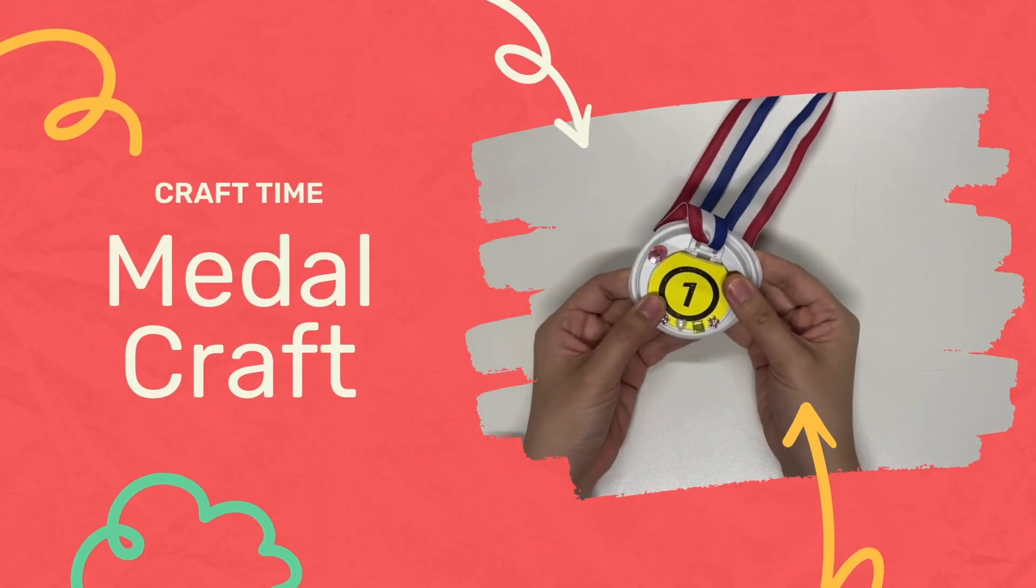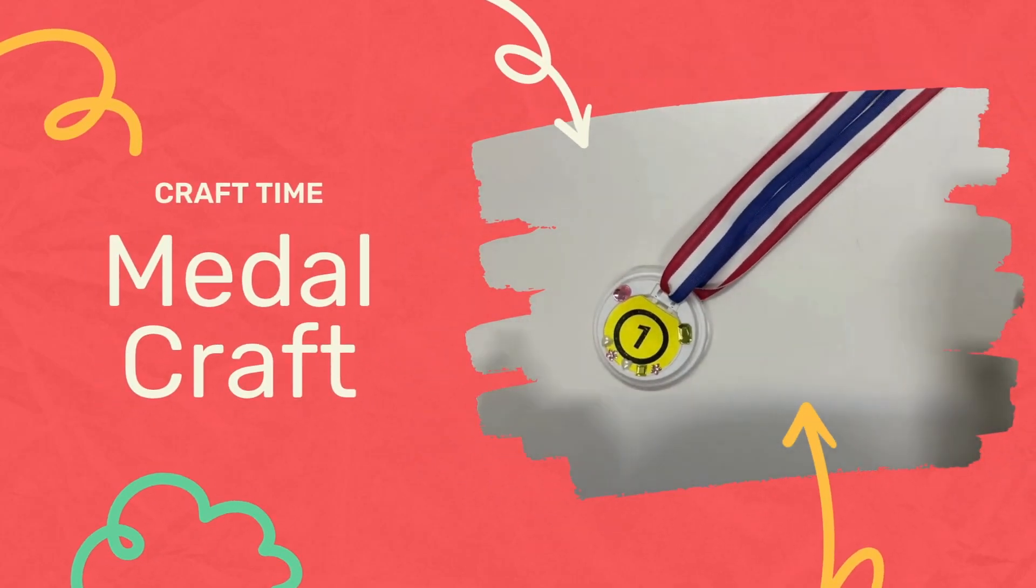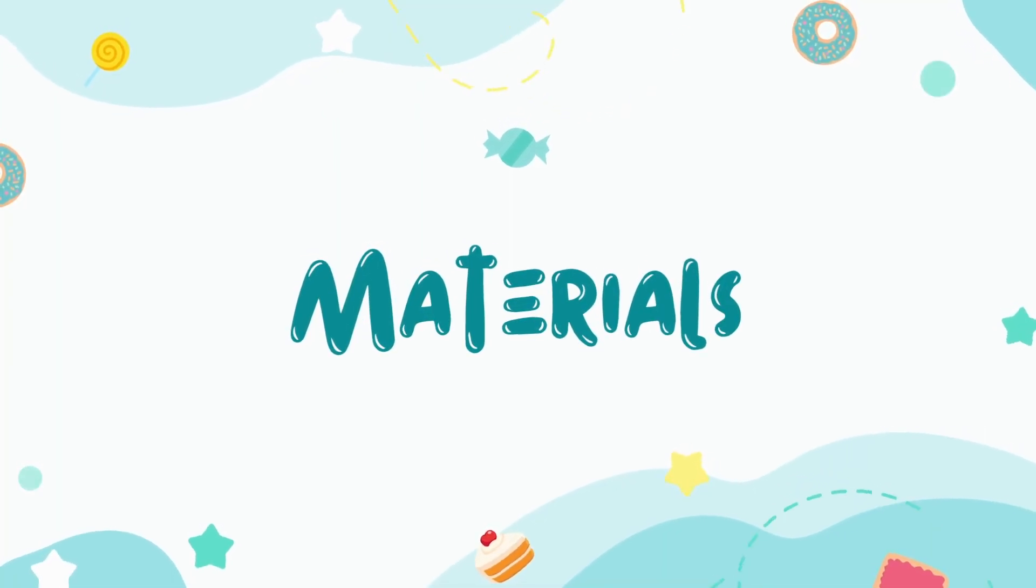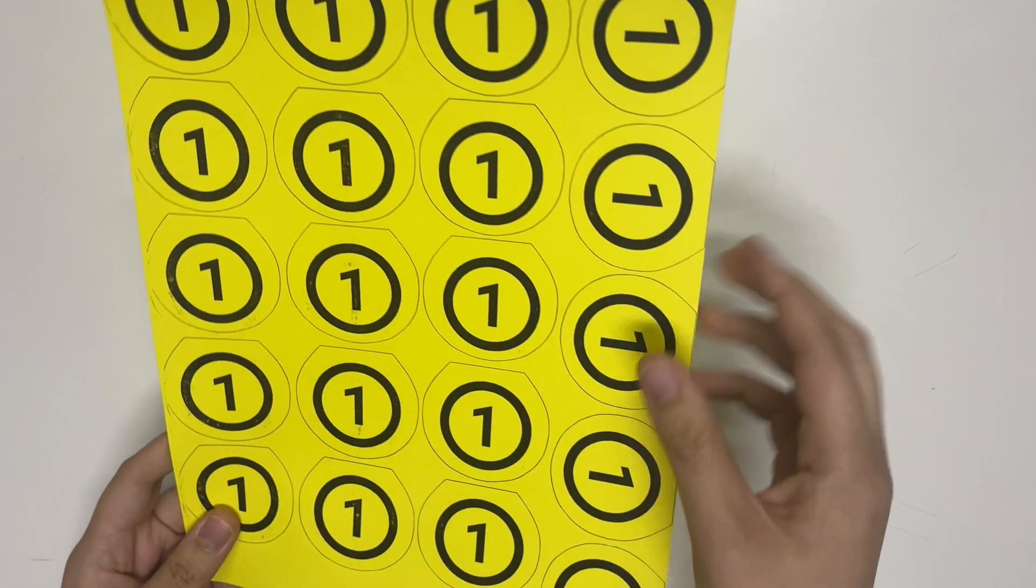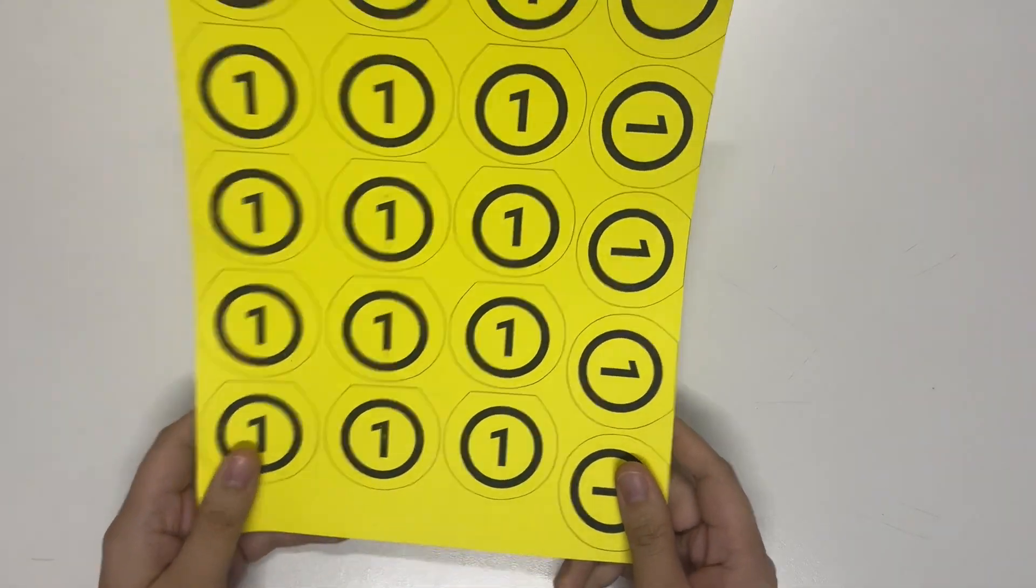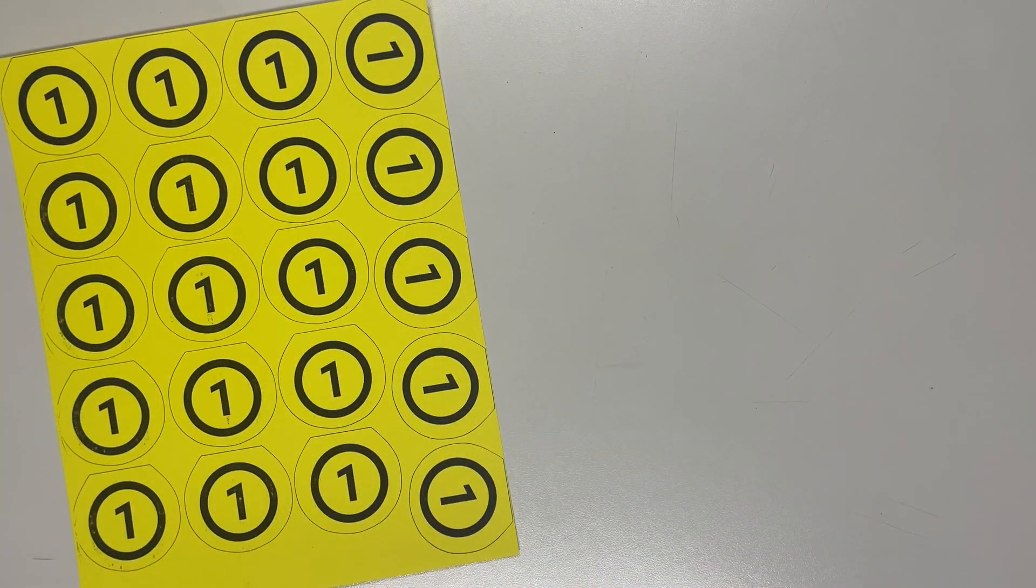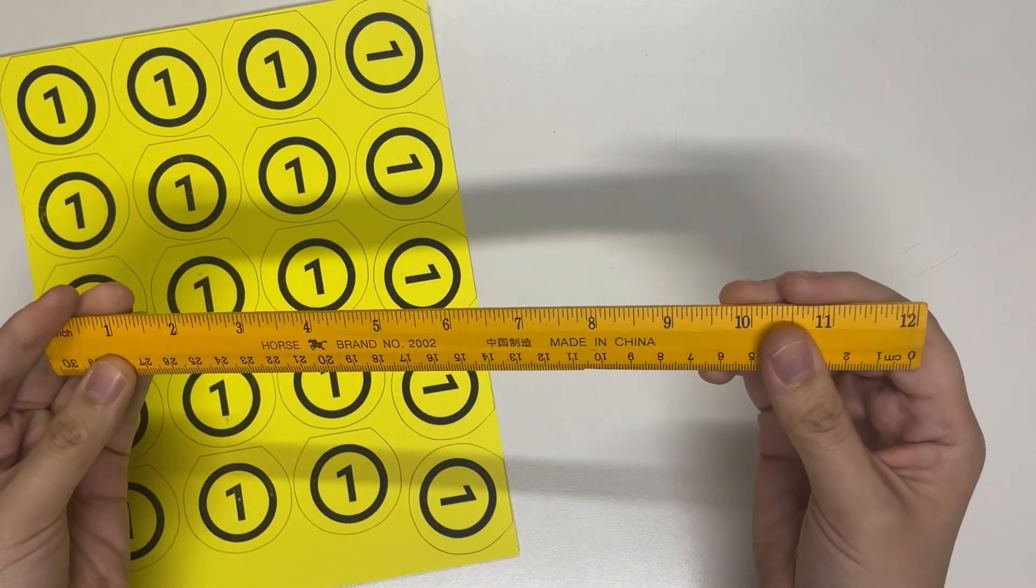Hi craft team, welcome to our craft instructional video. Today we're preparing the materials for our medal craft. Now let's get ready with our materials. First, make sure that you have the template of our medal printed on yellow cardstock or yellow board paper. We'll also need a ruler.